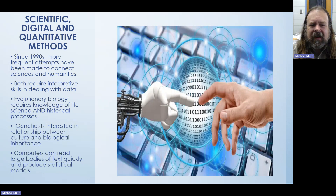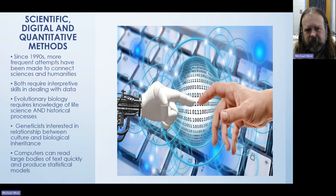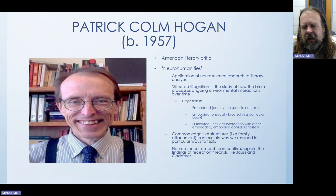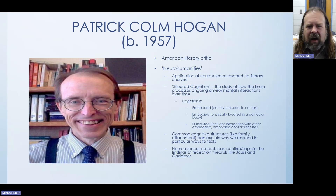These methods also take advantage of the fact that computers can read very large bodies of text much more quickly than a human being can, and can also produce statistical models and maps that show you unexpected relationships between things. Patrick Colm Hogan is an American literary critic based at the University of Connecticut, and he is a pioneer in the field of what he calls neuro-humanities — essentially the application of neuroscience research to literary analysis.